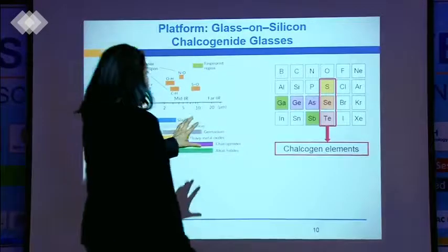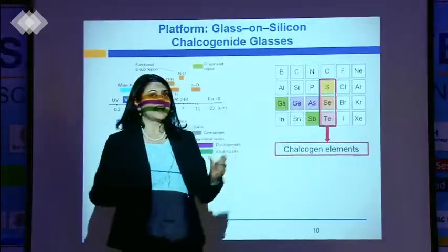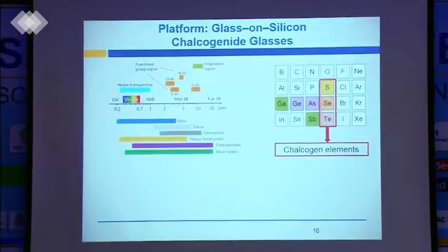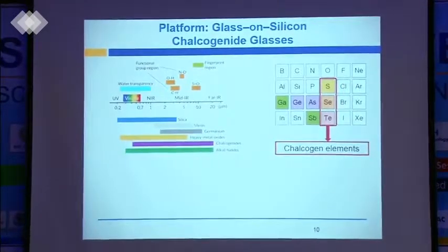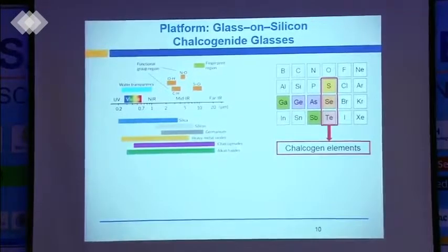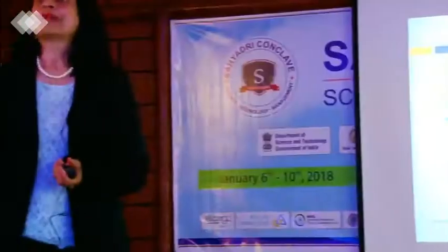Another interesting feature: look how many elements I have that I can juggle. So I now have flexibility. If I want to choose antimony, I can. If I want to choose germanium, I can. If I want to mix and match, I can. So there is my palette from my periodic table. I can mix and match materials and elements to make chalcogenide glass waveguides. That's another advantage.